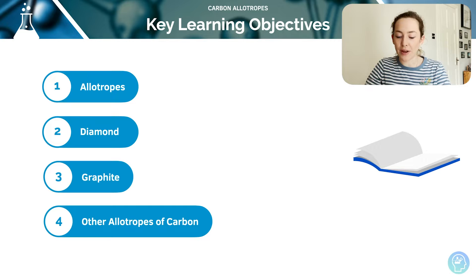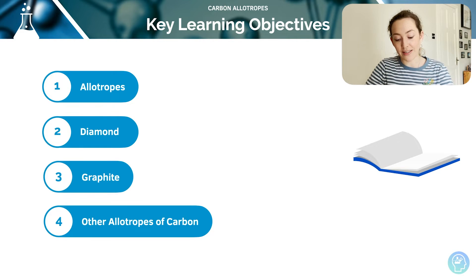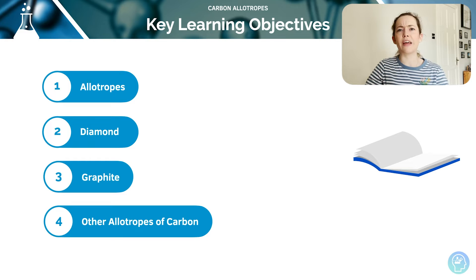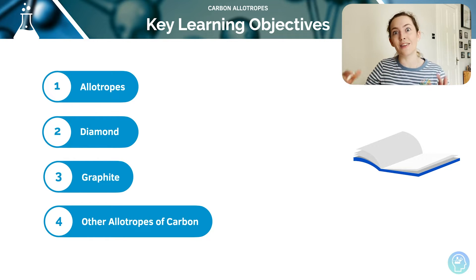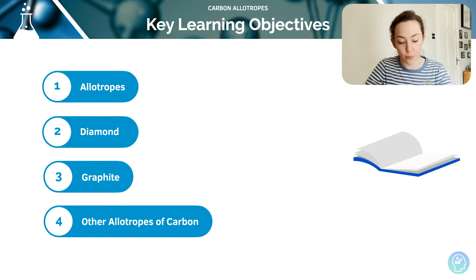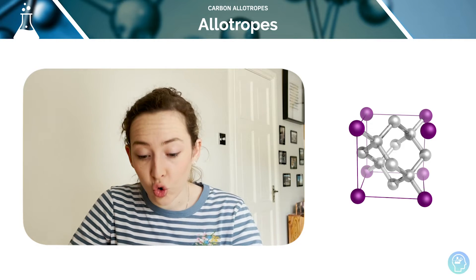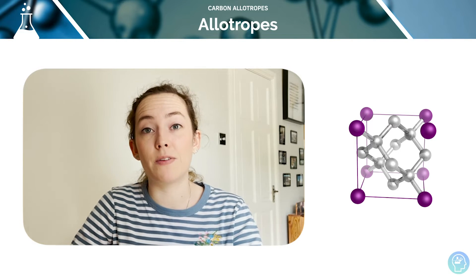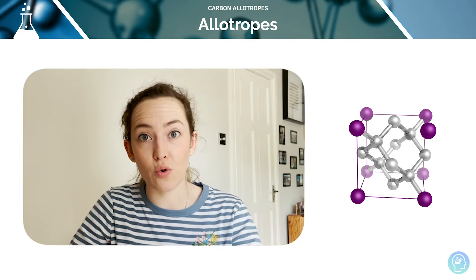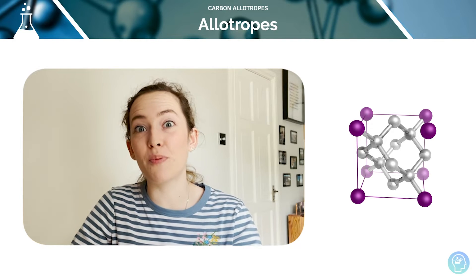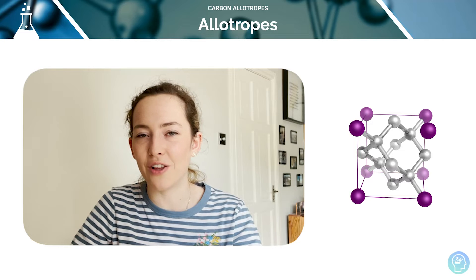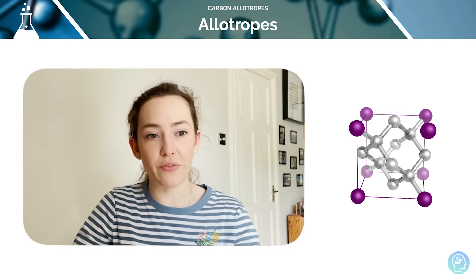So here we're having a look at carbon allotropes — what are allotropes, and the examples: diamond, graphite and other allotropes of carbon. You may well have covered this at GCSE, but it's important we've got a really strong foundational understanding. An allotrope is a different molecular or crystalline form of the same element resulting in different physical properties, and carbon is super exciting because it's got these different allotropes that we use for so many different things.